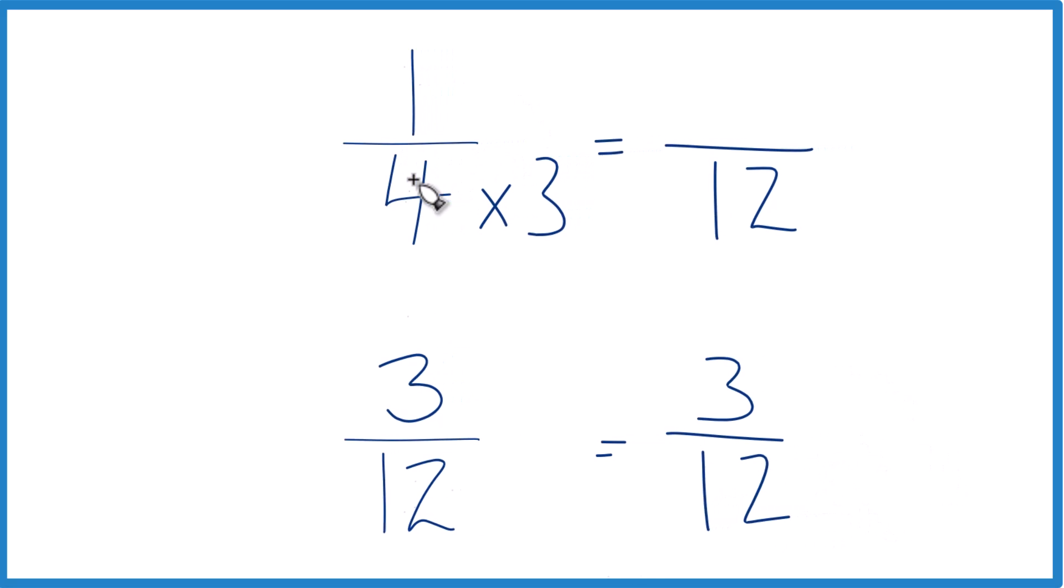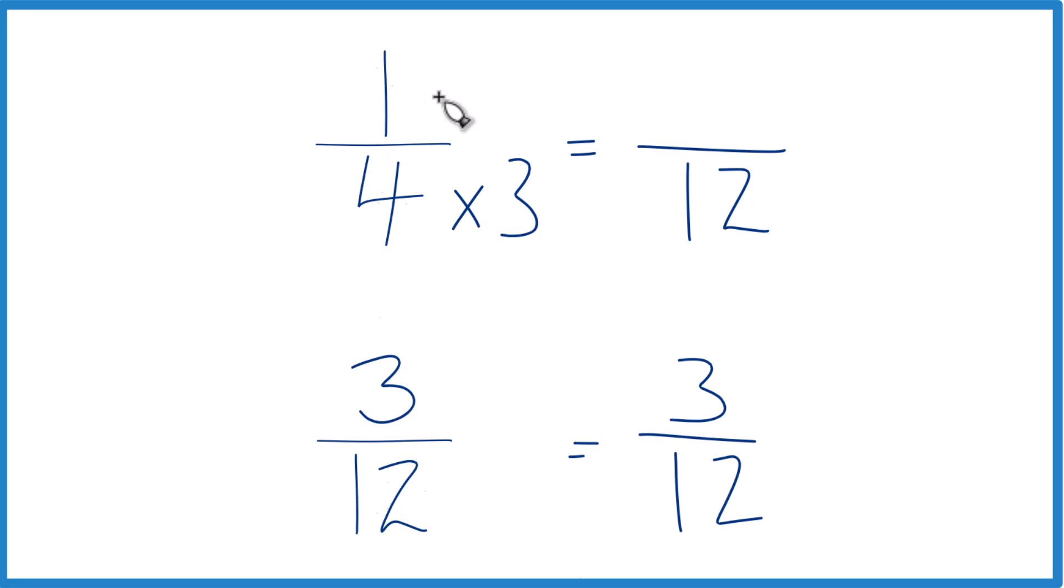And I multiply the denominator by three, but I also have to multiply the numerator by three. It's because three over three is just one, so I'm multiplying this by one. I don't change the value, just the way it's represented.